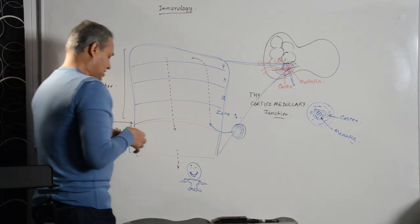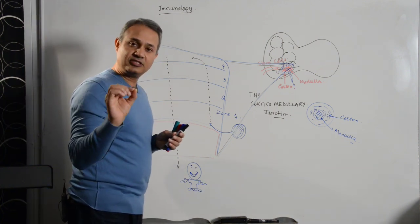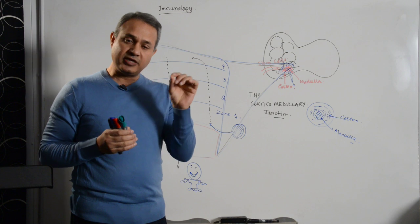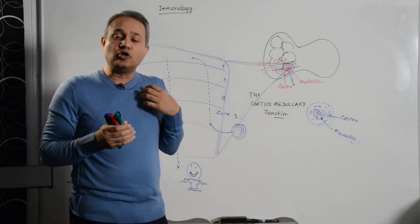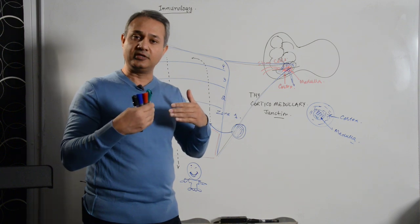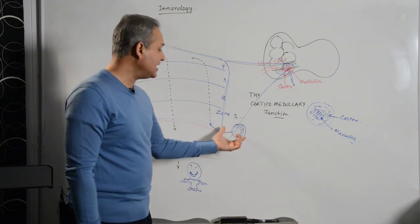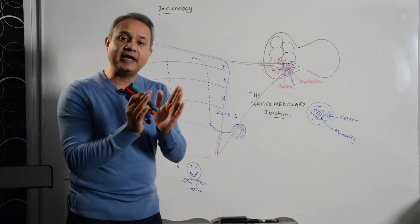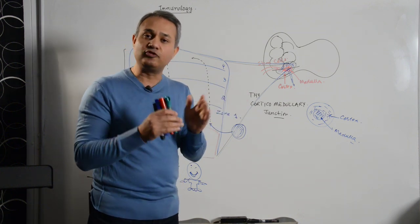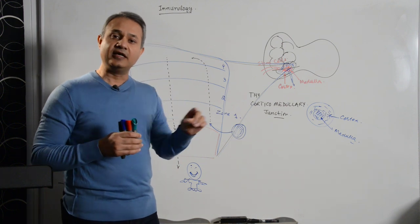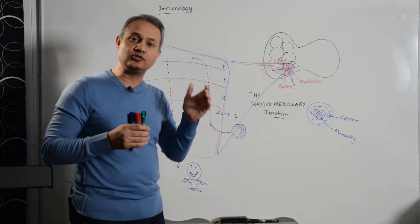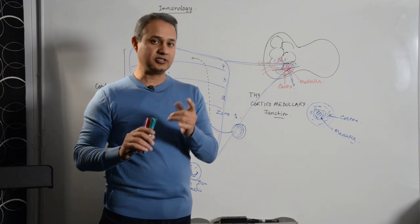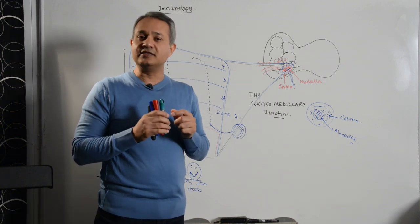I prefer to call this a selection process rather than education or training. Education or training implies that if a cell does not know something, we teach it and it learns. But here, if a cell is harmful, we cannot educate it to become a good cell — we have to kill it. We are not making bad cells into good cells; we are selecting good cells and killing bad cells. That is why this is a selection process, not education and not training.